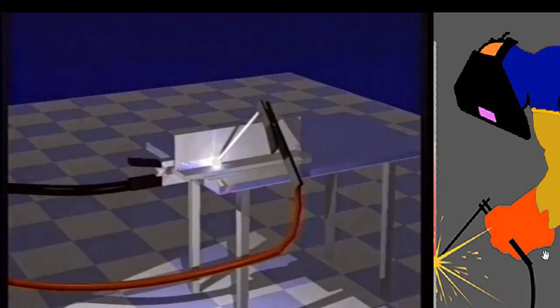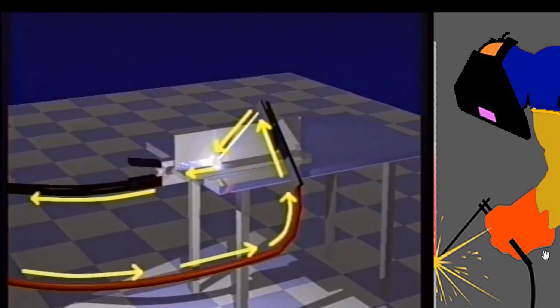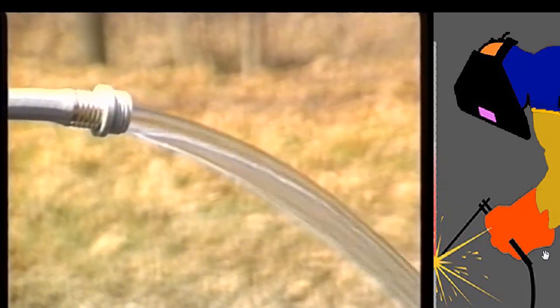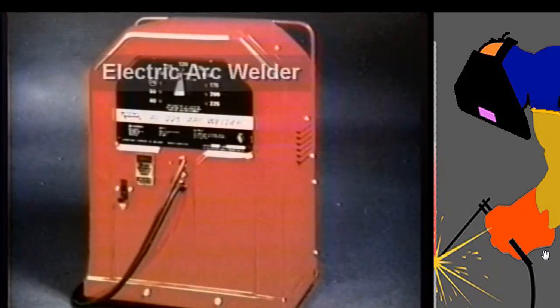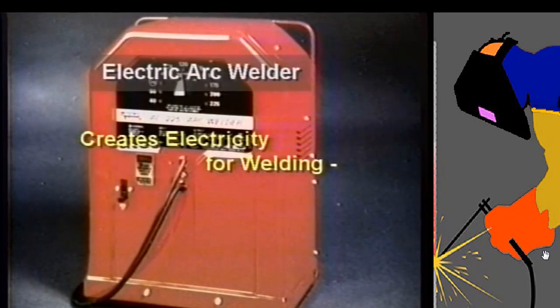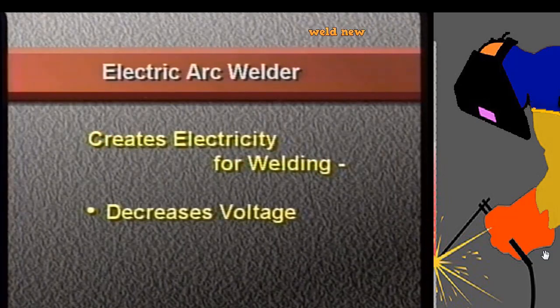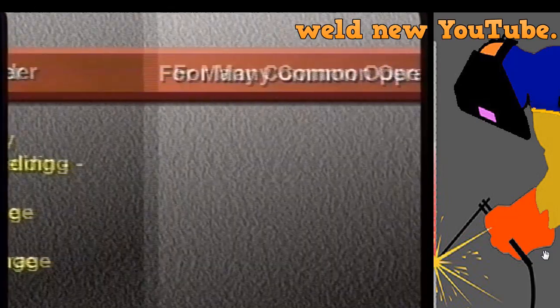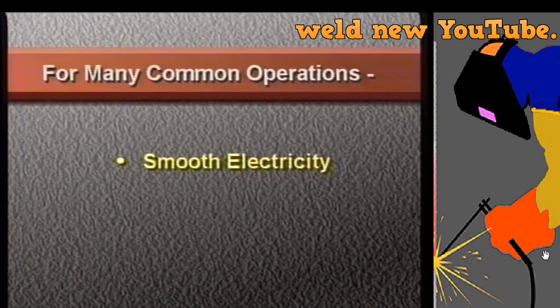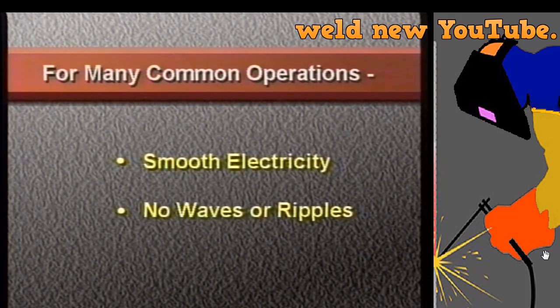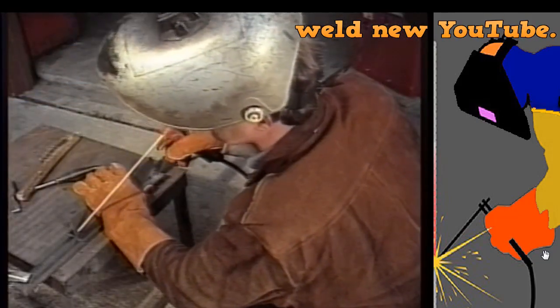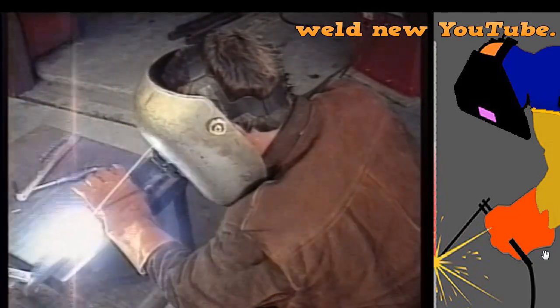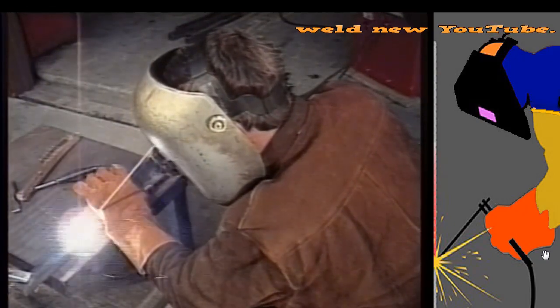Arc welding needs a larger diameter hose operating at relatively low pressure. We use an arc welder to create the kind of electricity desired for welding. The welder decreases the voltage of the power source while simultaneously increasing the amperage. In addition, for many common arc welding operations, we want very smooth electricity with no waves or ripples — we need direct current DC electricity. We can weld using alternating current too, but we'll focus on how DC arc welding technology works.